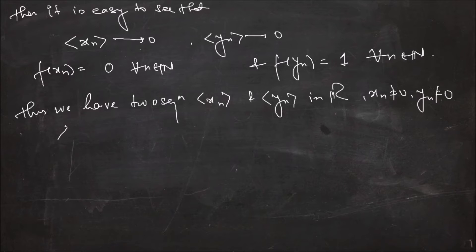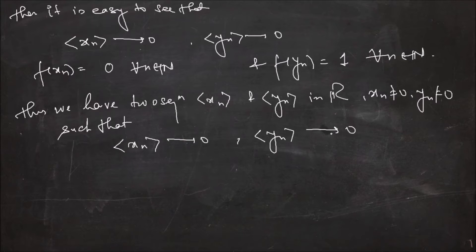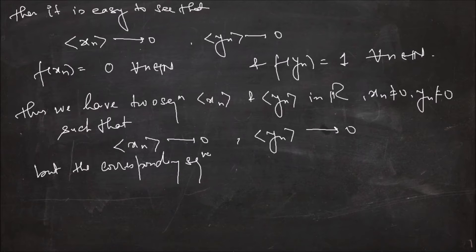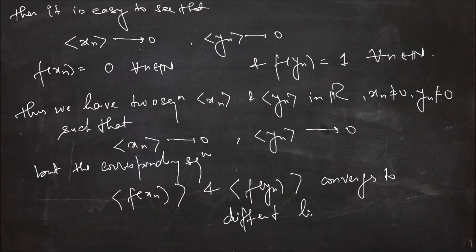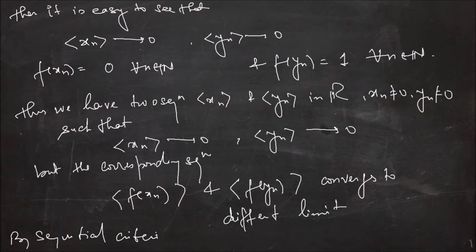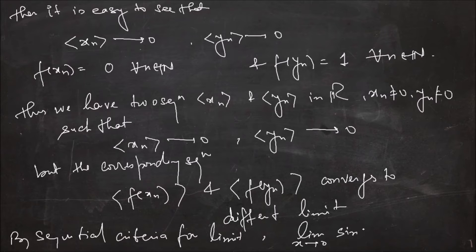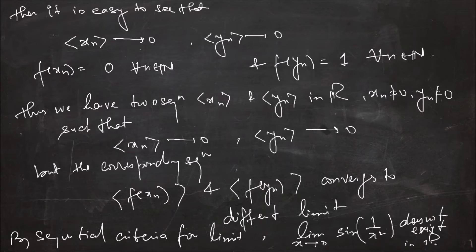Thus we have constructed two sequences xₙ and yₙ in ℝ, with xₙ ≠ 0 and yₙ ≠ 0, such that xₙ converges to 0 and yₙ converges to 0, but the corresponding sequences f(xₙ) and f(yₙ) converge to different limits. So by the sequential criteria for limits, the limit as x tends to 0 of sin(1/x²) does not exist in ℝ.